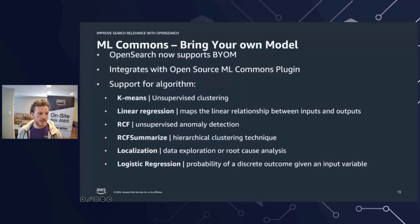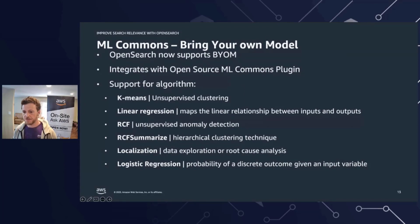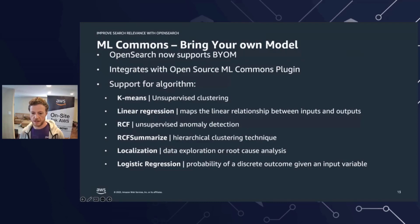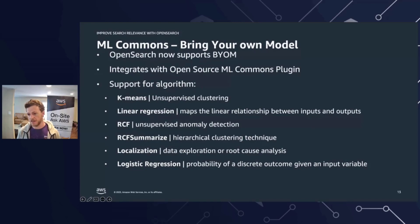The next feature we'll need is the ML Commons plugin. Amazon OpenSearch Service added support for the ML Commons plugin, which provides a set of common machine learning algorithms through transport and REST API calls. You can also interact with the ML Commons plugin through piped processing language commands. Using the ML Commons feature in OpenSearch, we can incorporate machine learning algorithms trained externally as part of the OpenSearch domain functions. ML Commons can also perform inferences, which is what we will use for semantic search.